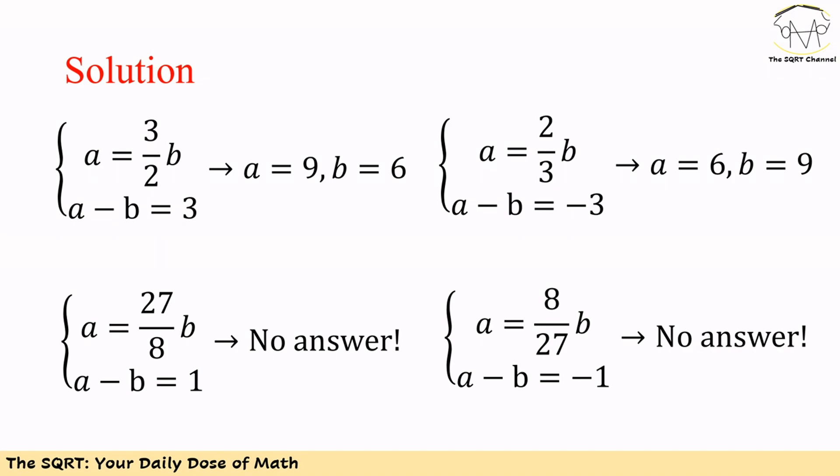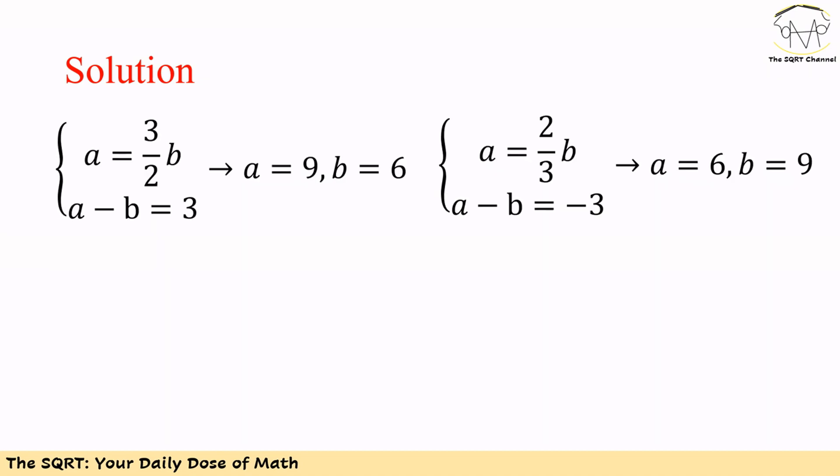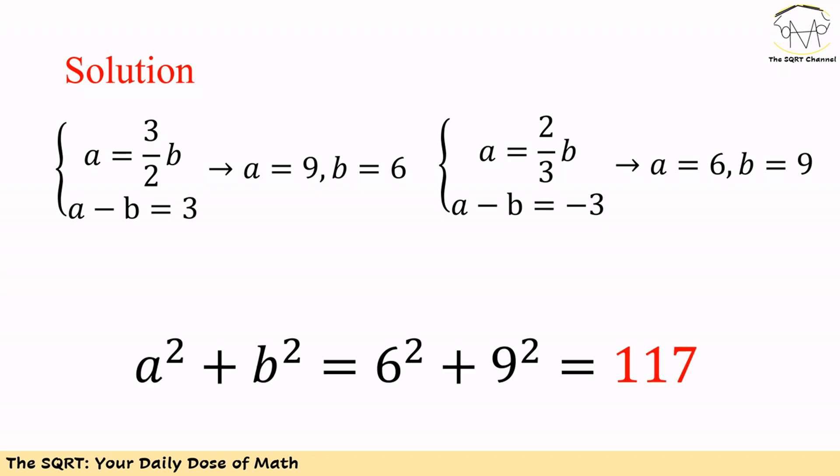So the only two valid solutions are (a, b) = (9, 6) or (a, b) = (6, 9). In both cases, a² + b² = 6² + 9² = 36 + 81 = 117.